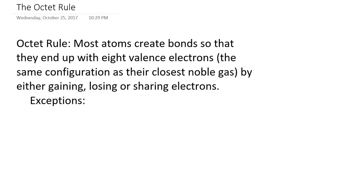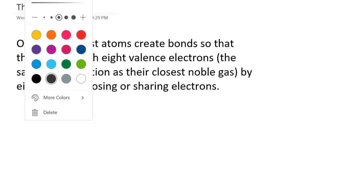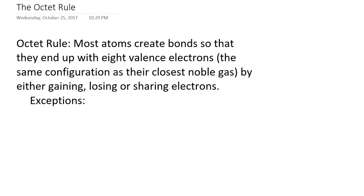The first guiding principle that will help us understand what valence electrons do in chemical reactions is the concept of the octet rule. The octet rule basically says that when atoms form chemical bonds during chemical reactions to form compounds, this will happen so that the atom ends up with 8 valence electrons. Some atoms have 8 valence electrons naturally, but most atoms do not.